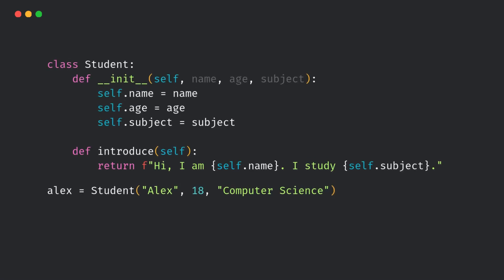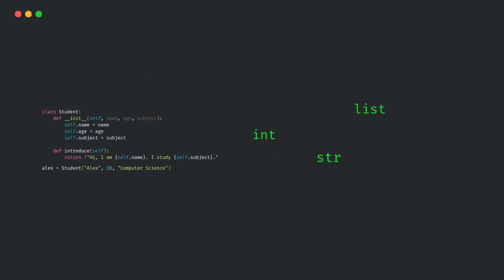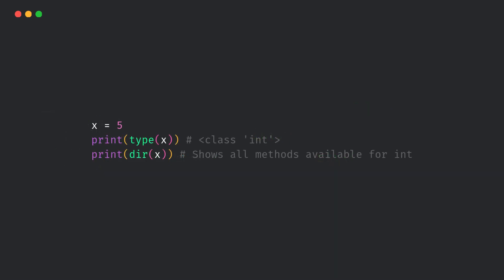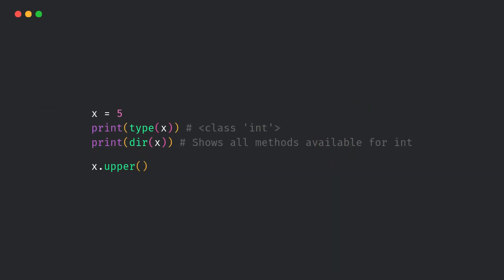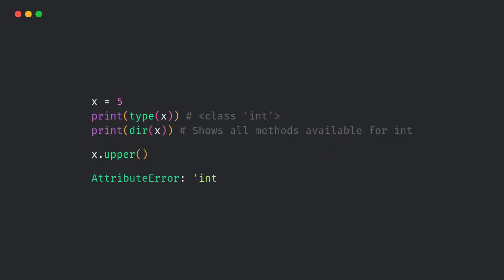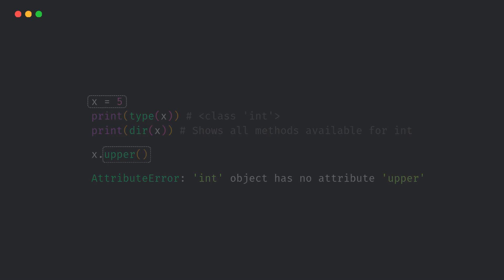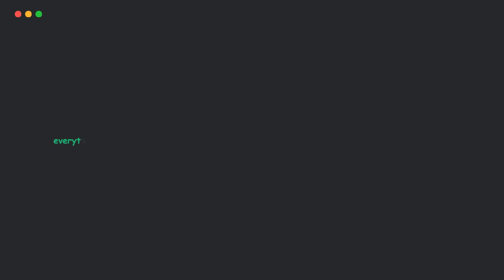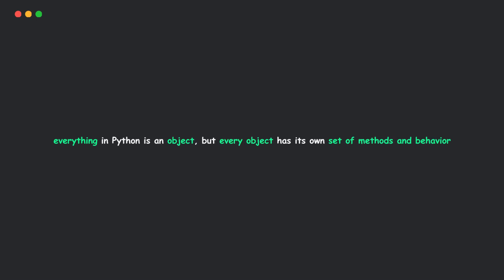This is not limited to just custom classes. Even built-in types like int, string, and list — they are all objects. Now, if you do that, you'll get this error. That's Python saying: X is an object, but it doesn't have a method called upper. In short, everything in Python is an object, but every object has its own set of methods and behavior.